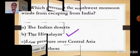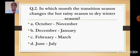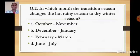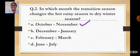Next question: In which month does the transition season change the hot rainy season to dry winter season? Option A: October-November. Option B: December-January. Option C: February-March. Option D: June-July. The correct answer is Option A — October-November.